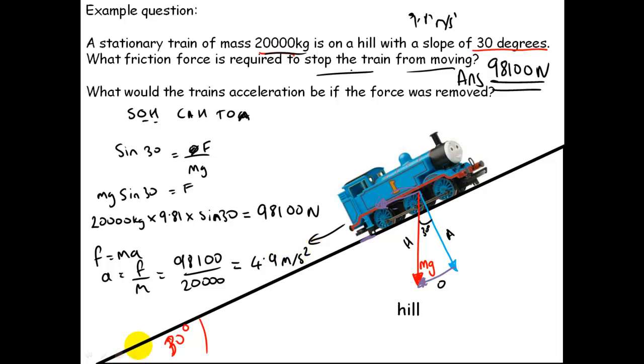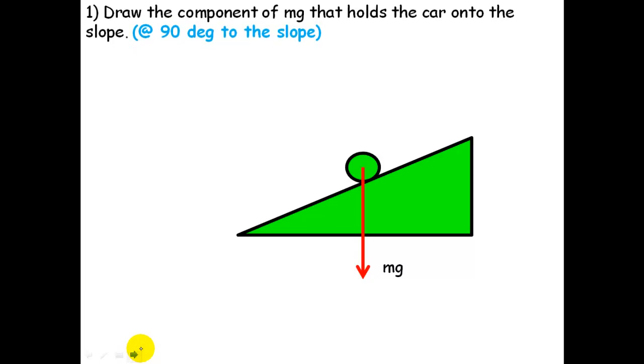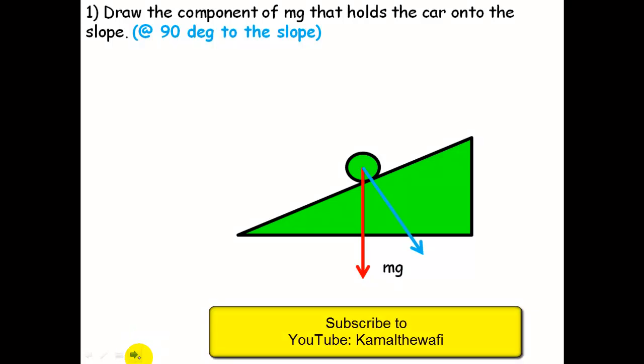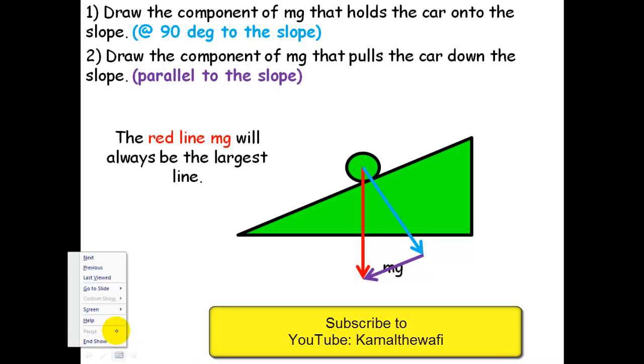I hope this was useful. Let's have a look at just a summary of what you should have learnt. First things first - if you get a question like this, you can draw the component of MG that holds the car, or whatever it is, onto the slope. This is at 90 degrees to the slope. Then draw a parallel line to the slope, completing the triangle. MG will always be the biggest line. I hope you found this useful. If you have any questions or comments, I'd be happy to answer them. Thank you very much.